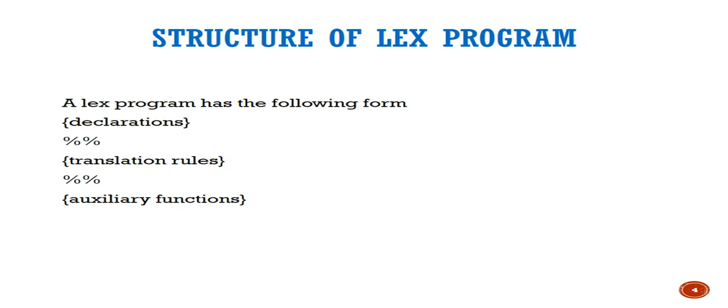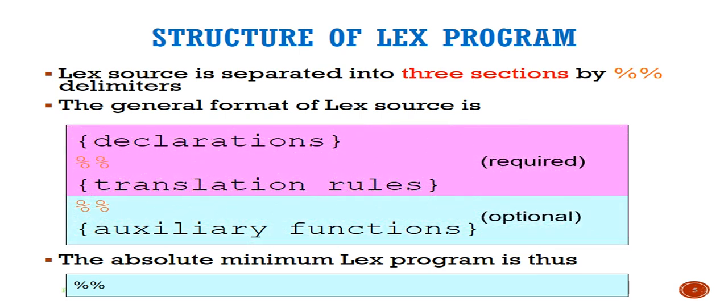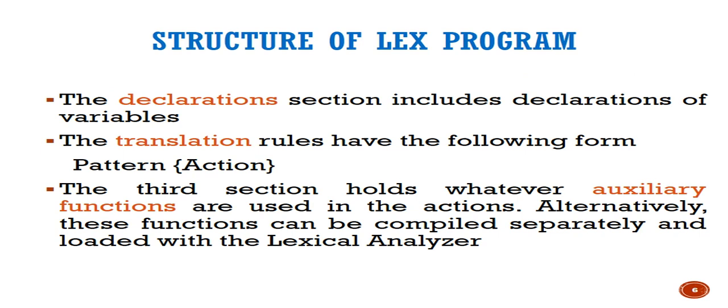A Lex program has three sections: declarations, translation rules, and auxiliary functions. These three sections are separated by double percentage signs (%%). The first two parts — declarations and translation rules — are compulsory, while the third part (auxiliary functions) is optional. The absolute minimum Lex program is just '%%'. The declarations section includes declaration of variables.